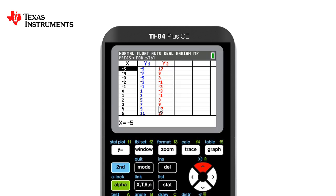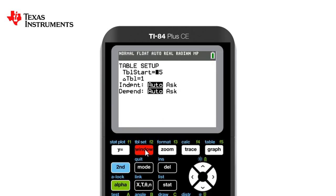If we want to change what the axis goes up by, we can press table set which is second window and that allows us to change the increments.